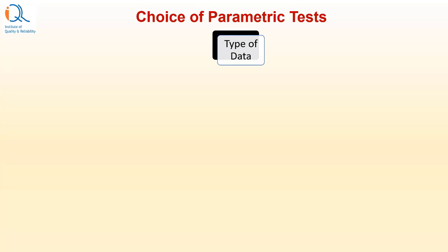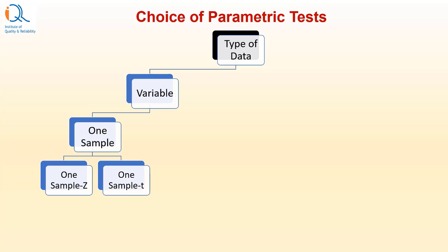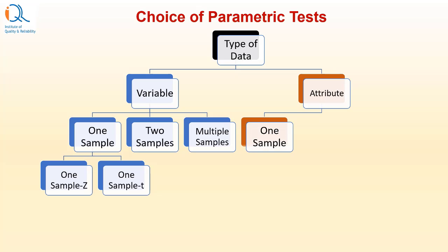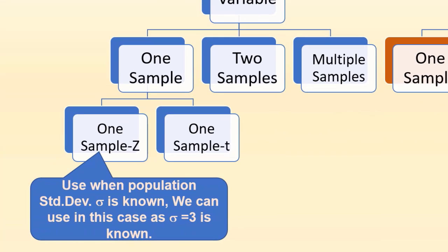So which parametric test is appropriate? For variable data we can have one-sample tests — one-sample z or one-sample t — two-sample tests, or multiple sample tests. For multiple sample tests we use analysis of variance. If the data is of attribute type, we can have one-proportion, two-proportion, or multiple-proportion tests. In our case, we will use one-sample z because we use this when population standard deviation sigma is known. Since sigma = 3 is known and specified in the problem, we can apply this test. One-sample t is used when population standard deviation sigma is not known.